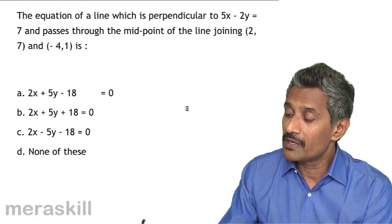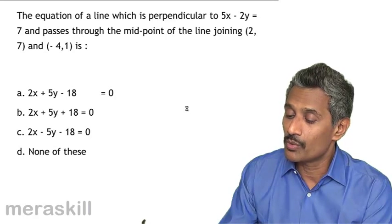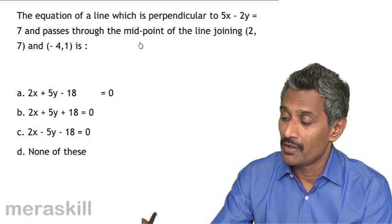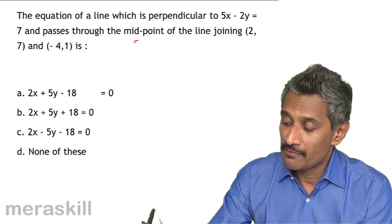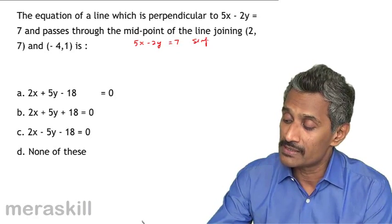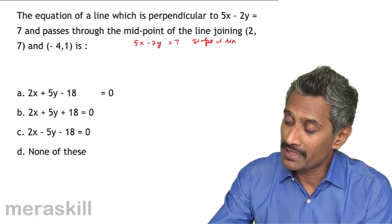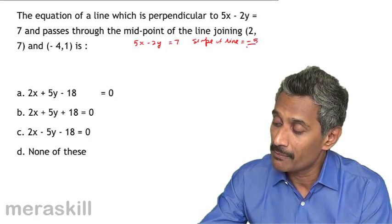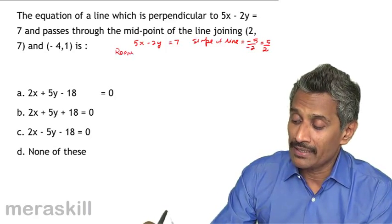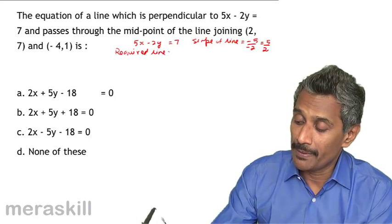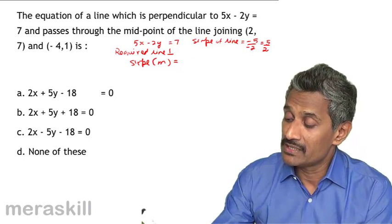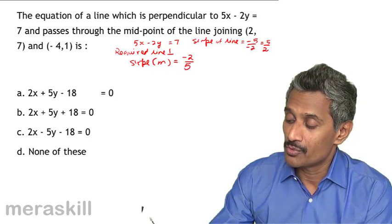The next problem: find the equation of a line perpendicular to 5x minus 2y plus 7 equals 0, passing through the midpoint of the line joining 2 comma 7 and minus 4 comma 1. The slope of line 1 is minus a by b, which is minus 5 upon minus 2, that is 5 by 2. Since the required line is perpendicular, its slope m is the negative reciprocal, which is minus 2 by 5.